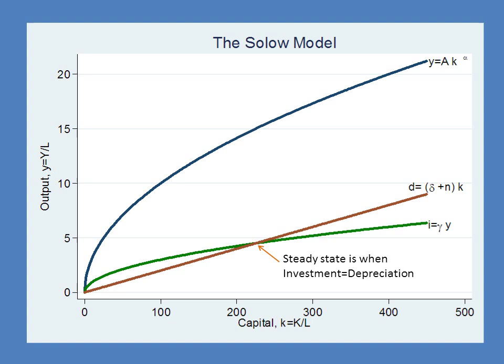The key to the Solow model is that you reach the steady state when investment equals depreciation. Taking the equations for investment and depreciation and setting them equal, the steady state is found when this equation is true. Output per person Y equals A times the capital-labor ratio to the power of alpha. Substituting that in, here is our equation for the steady state.